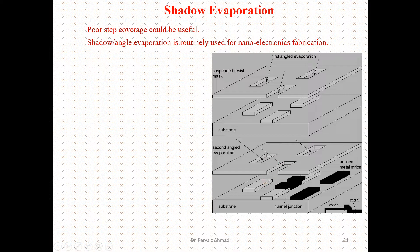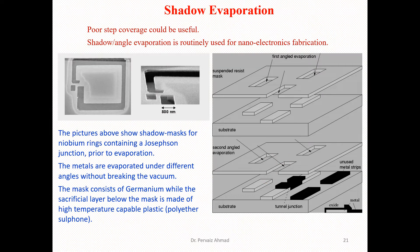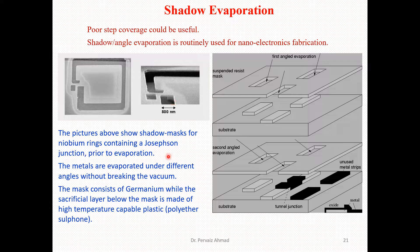An example of shadow evaporation is shown in this figure — a shadow mask for niobium rings containing Josephson junctions, shown prior to evaporation. The metals are evaporated under different angles without breaking the vacuum. The mask is made of germanium, and the sacrificial layer below the mask is made of a high-temperature-capable plastic called polyethersulfone.